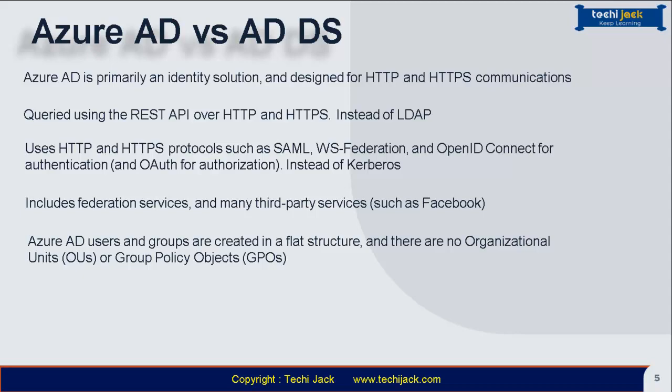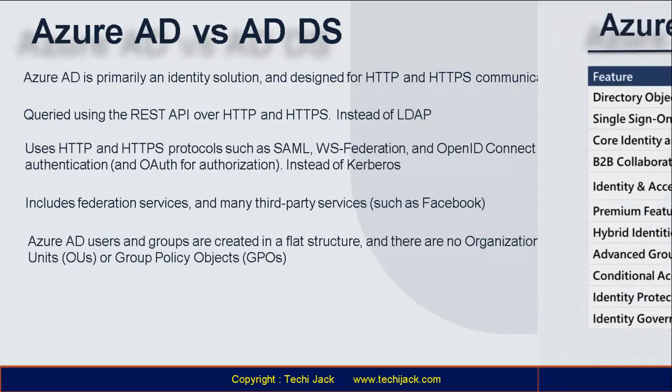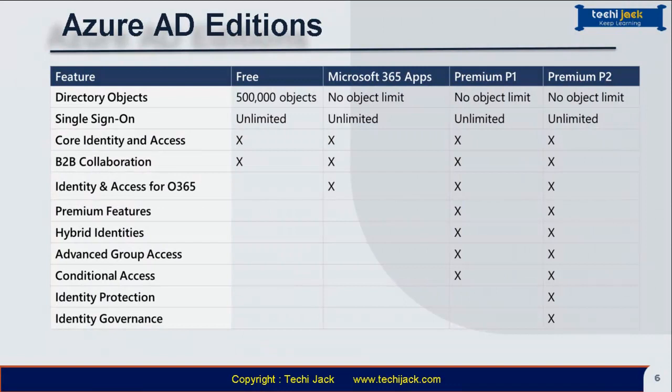Now let's look at the Azure Active Directory editions. Azure Active Directory comes in four editions: Free, Microsoft 365 Apps, Premium P1, and Premium P2. The Free edition is included with an Azure subscription. The Premium editions are available through a Microsoft Enterprise Agreement, the Open Volume License Program, and the Cloud Solution Providers program. Azure and Microsoft 365 subscribers can also buy Azure Active Directory Premium P1 and P2 online.